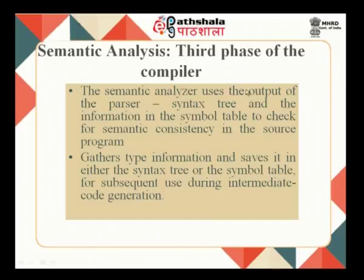The third phase is the semantic phase of the compiler. It uses the output of the parser — the syntax tree — and the information in the symbol table to check for semantic consistency in the source program. Type checking happens in this phase: it gathers type information and saves it in the symbol table or syntax tree for subsequent use during code generation. For example, if a = b + c, and b is an integer and c is also an integer, then a gets an integer value. If b is floating point and c is floating point, then a gets a floating point value.